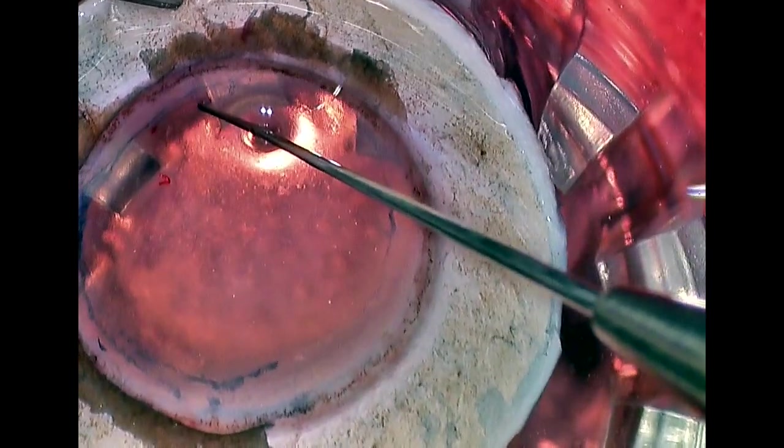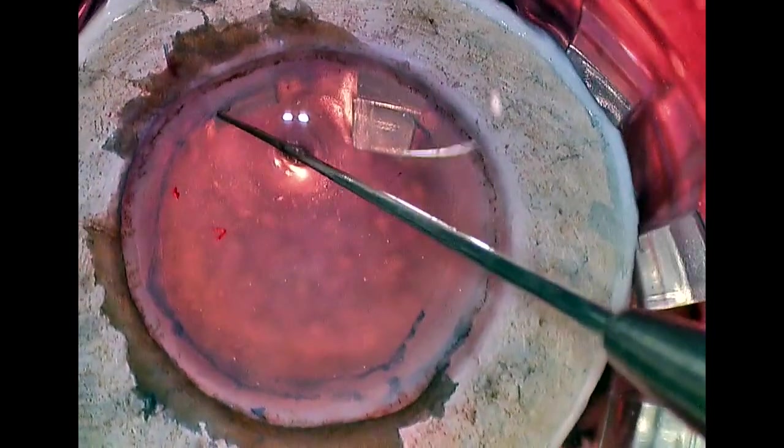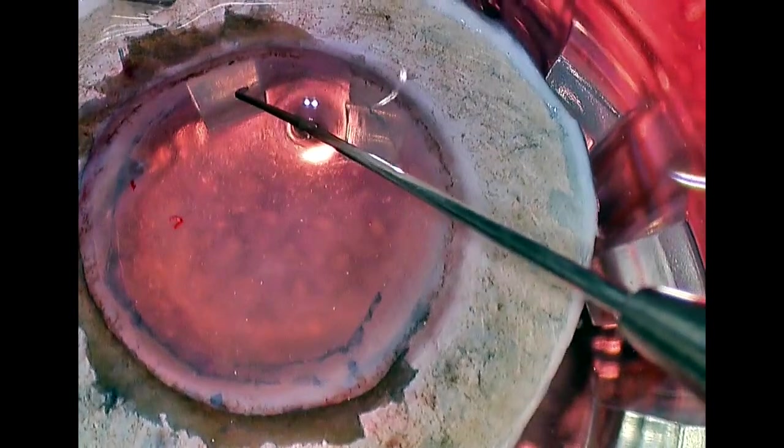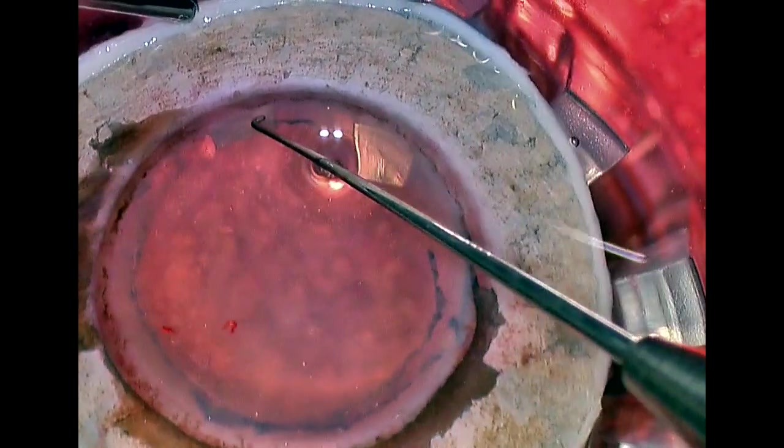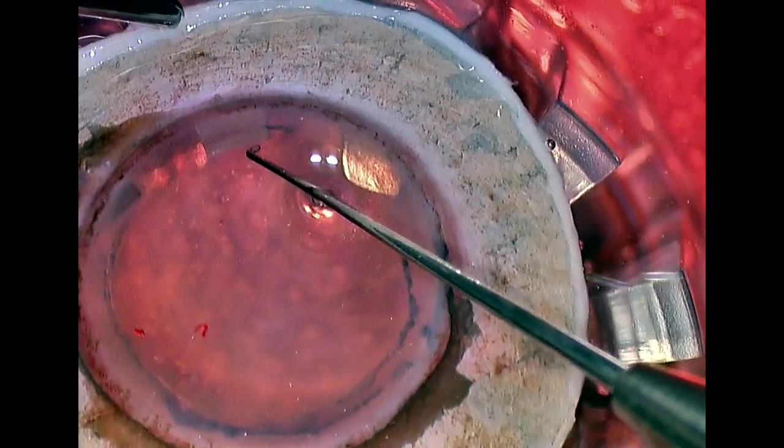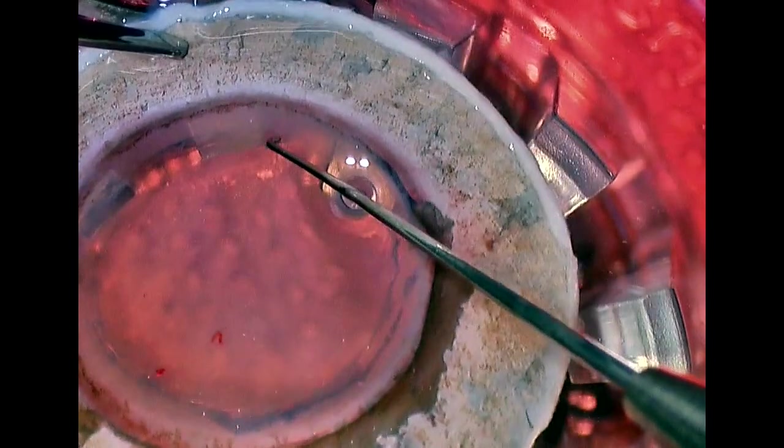Here what we're doing is using a Szynski hook to free up the peripheral edge of the cornea. And the reason we do this is because when we start to peel the graft, we won't want any edges getting pinned down that might cause a rip or a tear in the graft as it's being peeled. So we're going to go 360 degrees and free up all those edges. You can kind of see there how the edge just comes down slightly so that it's not stuck to the periphery.